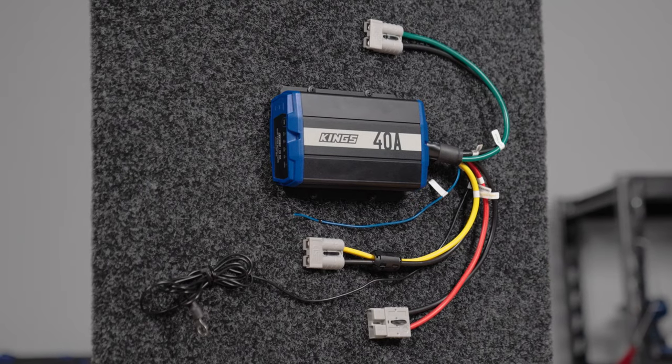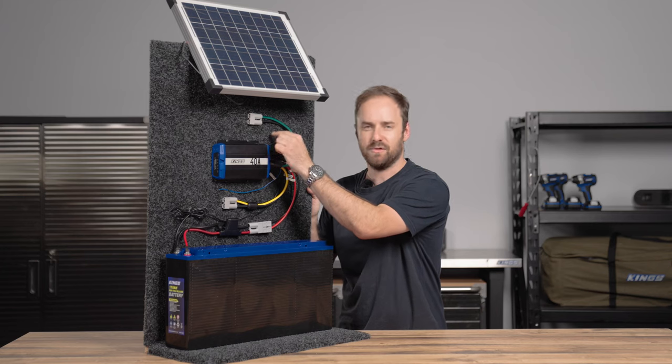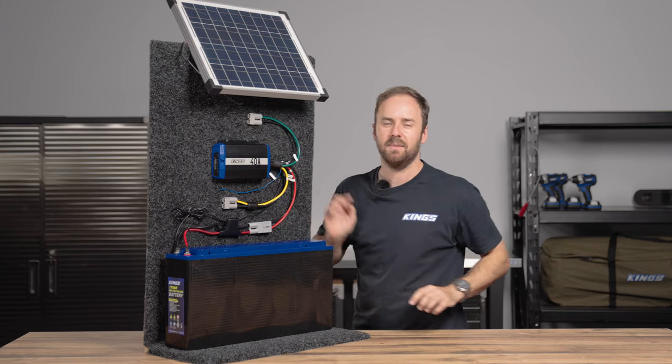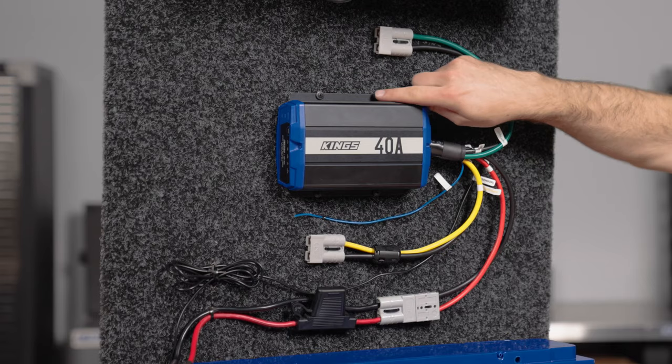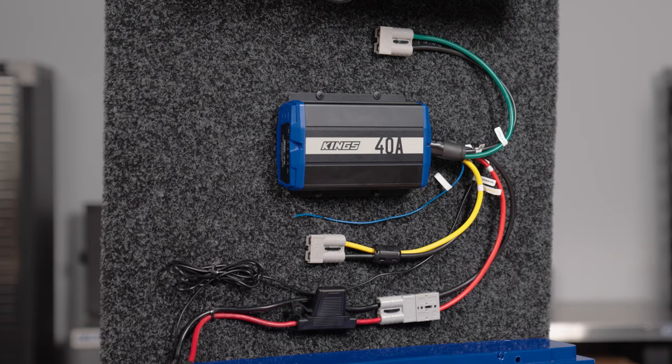First, let's talk about a typical, really simple headboard setup where you've mounted the DC-DC charger direct to the headboard and then connected it up to your battery. They use four mounting slots, so they're basically universal. You can mount them just about anywhere.